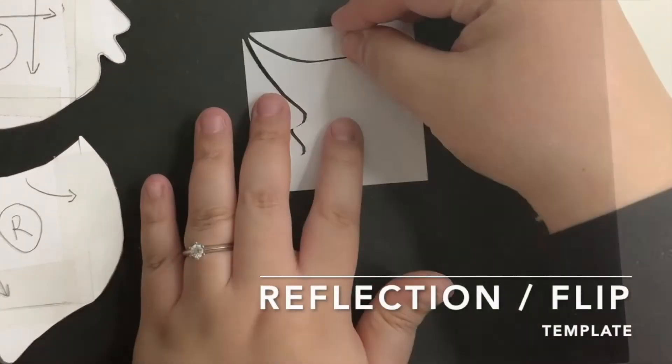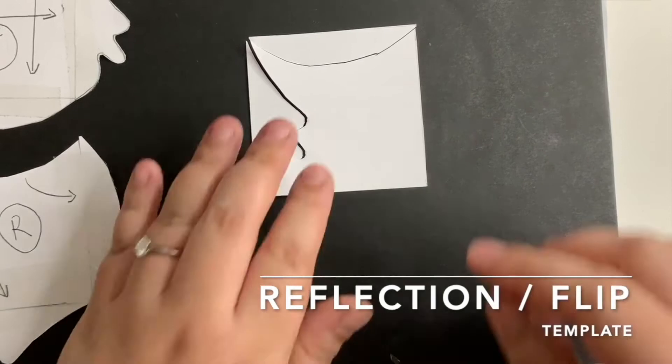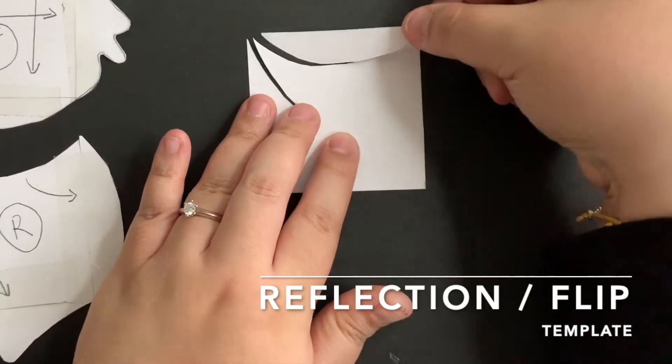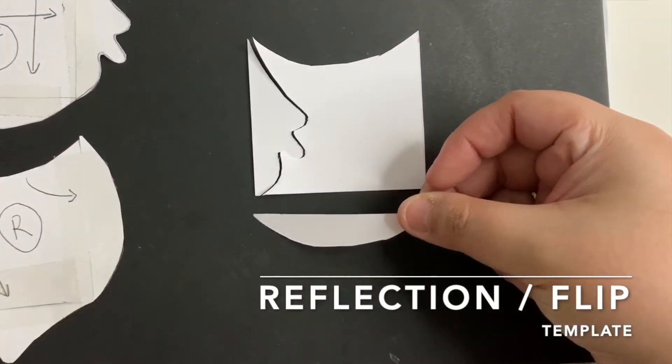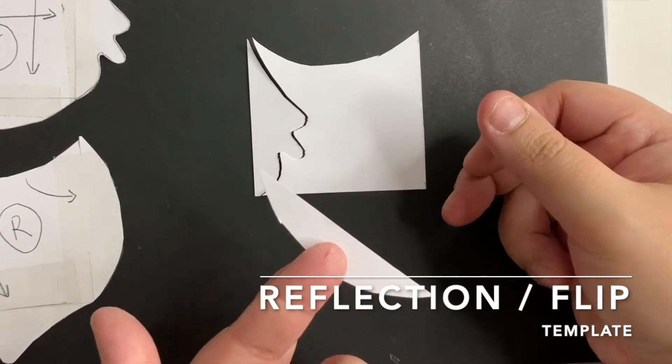Next, using the same shape again, I'm going to create the reflection or flip template. This is a little tricky so watch this carefully. Slide the top piece to the opposite side and flip it.